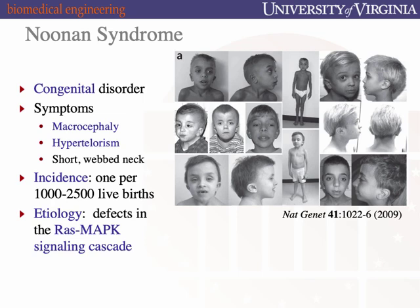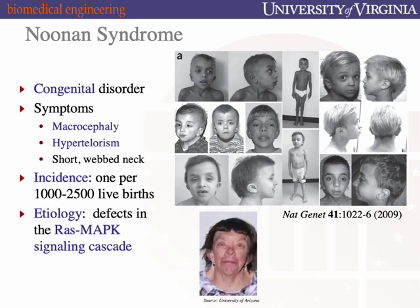The etiology relates to defects in a specific signaling cascade called the RAS-MAP kinase cascade, or RAS-MAPK, which we'll discuss in more detail when covering cell cycle and cancer at the end of the semester. In spite of these developmental symptoms, the phenotypes are remarkably mild given the signaling disorder. There are also cardiac complications in Noonan syndrome patients, which can be treated pharmacologically, allowing individuals to live into old age.